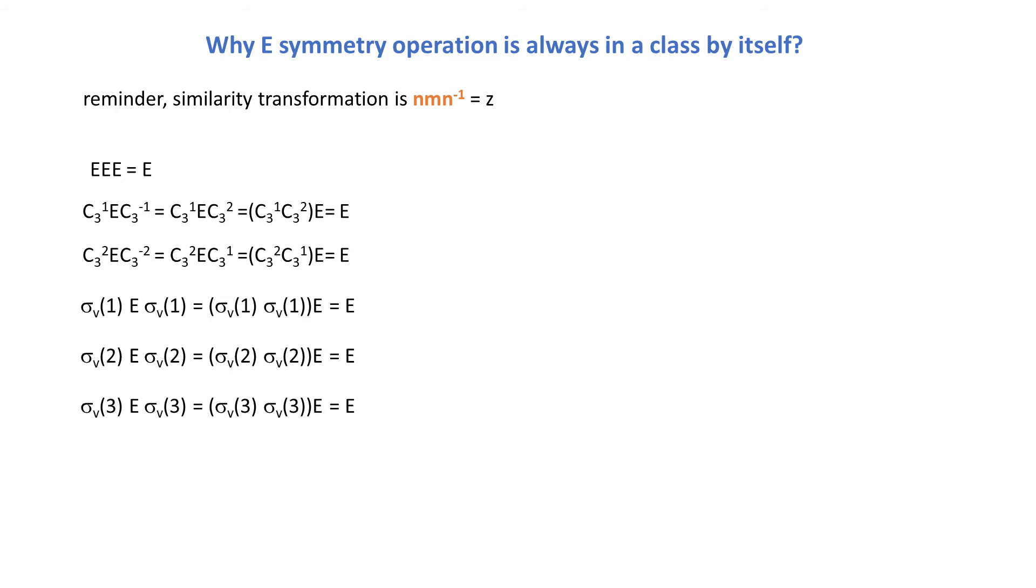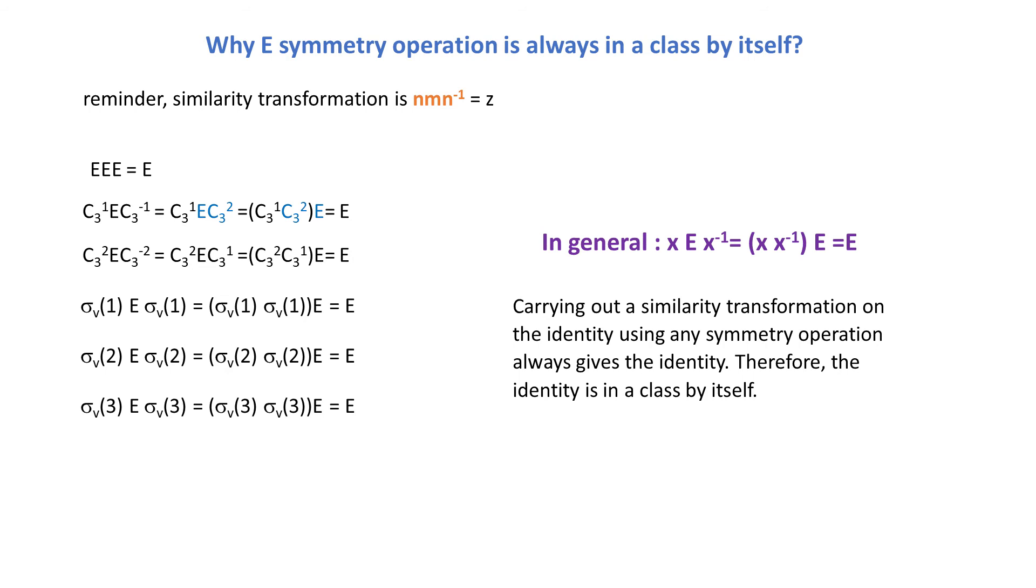And then reflections follow the same pattern. So in general, E is in a class on its own, because it commutes with every element. E and x-1 swap places, and then x-1.x gives E.